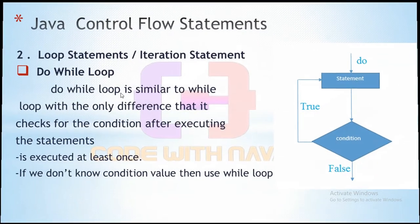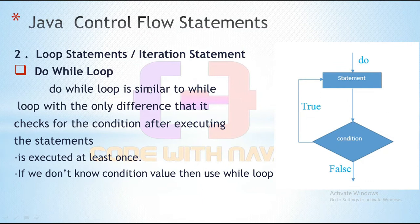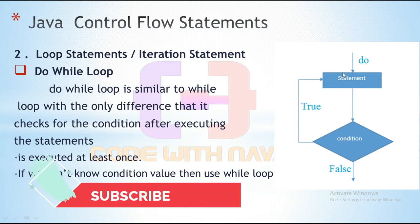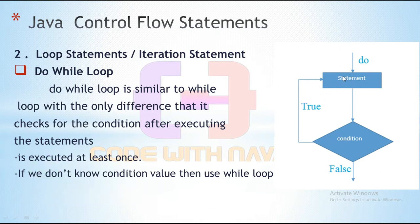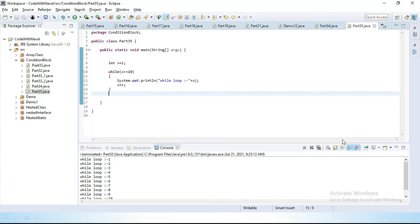Now we have the do-while loop. Do-while loop is similar to while loop with the only difference that it checks the condition after executing the statement. It first executes the statement, then checks the condition. It executes at least once because execution happens first and then the condition is checked. If the condition is true it keeps executing; otherwise control comes outside the iteration. If we don't know the condition value, we can use a do-while loop.